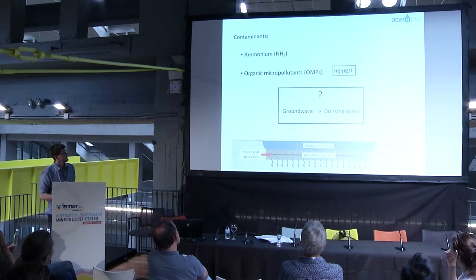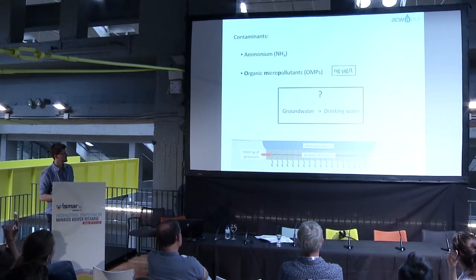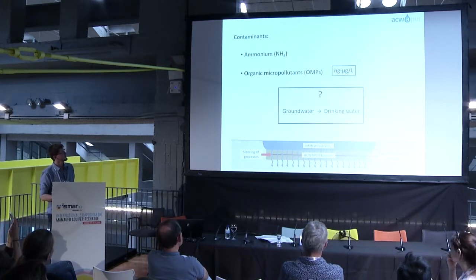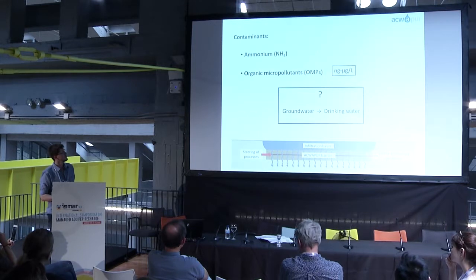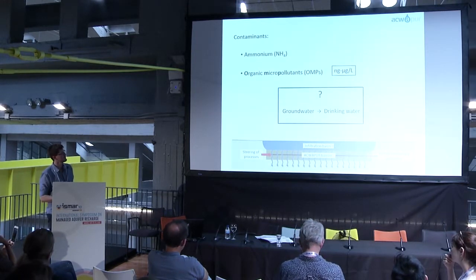In the bottom, you can see the schematic overview of such a barrier location. And as I mentioned, the contaminants we studied were ammonium and organic micropollutants. I will use abbreviation OMPs for these.